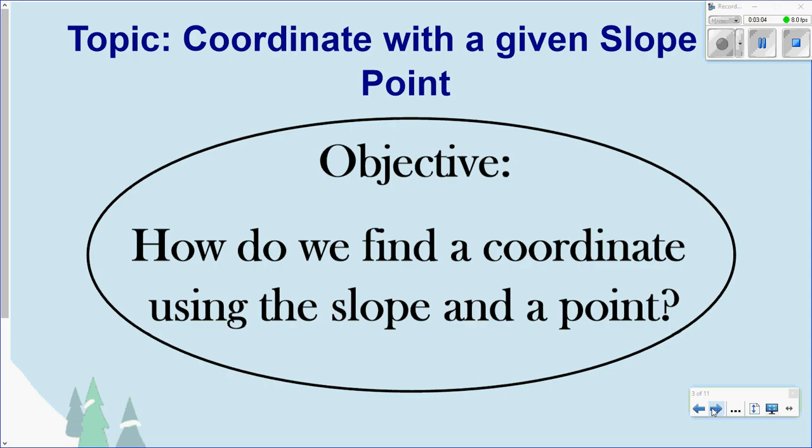Our next lesson is a continuation of lesson 3. Previously we plotted points or found a slope based on two given points. But now we're going to find coordinates with a given slope and a point. So the objective is: how do we find a coordinate using a slope and a point? There are cases where we have two points but need to find one of the coordinate values when given a point and a slope.